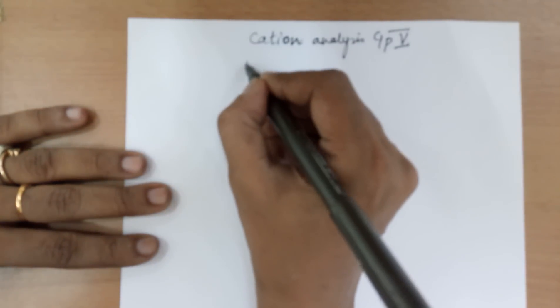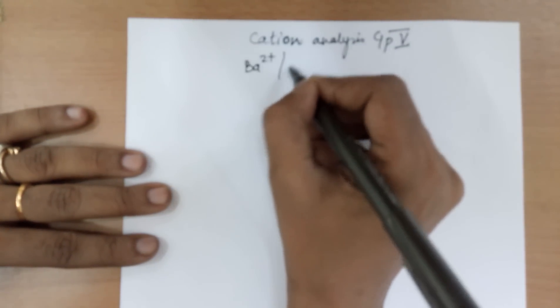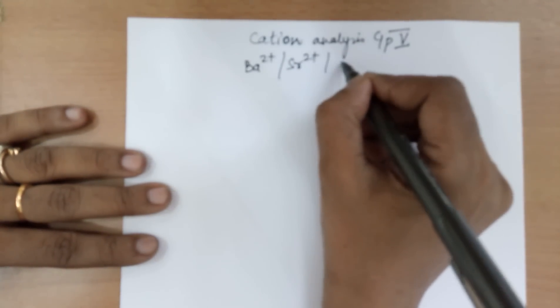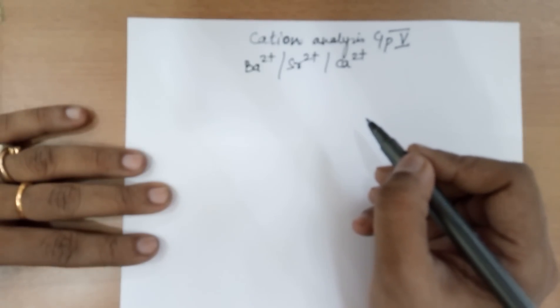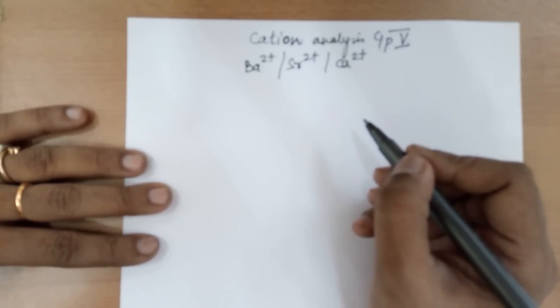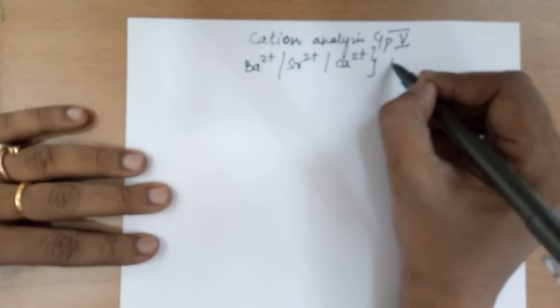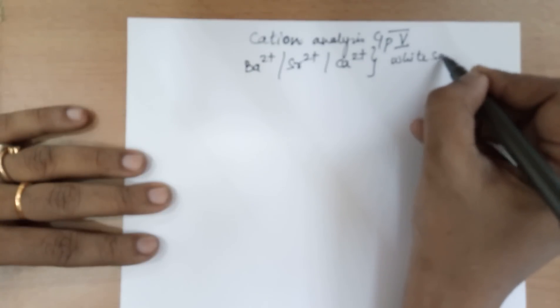The cations of group 5 are barium, strontium and calcium and none of them is a colored salt. This would only be applicable to white salts.